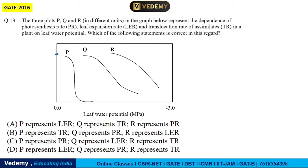Next question: three plots P, Q, and R in different units represent the dependence of photosynthesis rate (PR), leaf expansion rate (LER), and translocation rate of assimilate (TR) in a plant on leaf water potential. The x-axis shows leaf water potential starting from 0 (pure water) going to minus 3.0. When water concentration is at 0, P is at maximum — and since leaf expansion rate is most dependent on water, P represents LER.